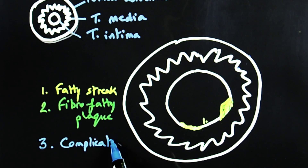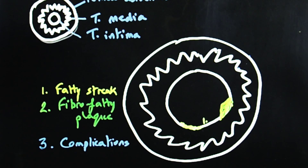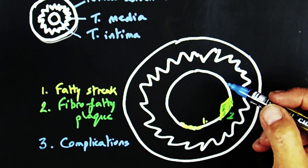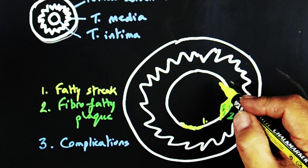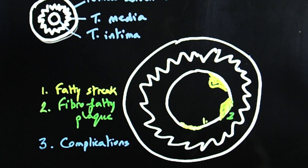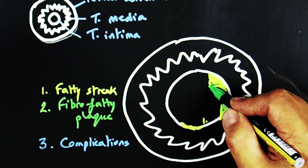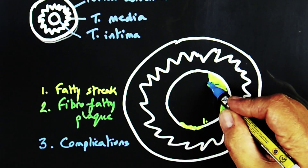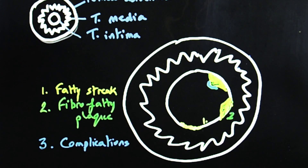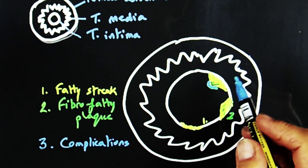In this third stage of atheroma disease, we have an established fibro-fatty plaque, which includes abundant extracellular lipid and local collagen. An important complication is that of surface ulceration. In a subsequent video, we'll be discussing other complications of this process.